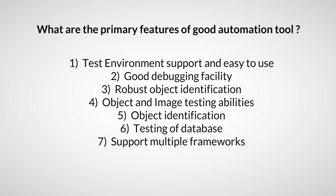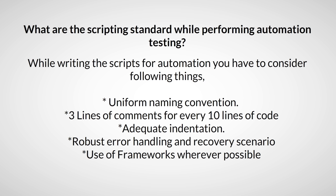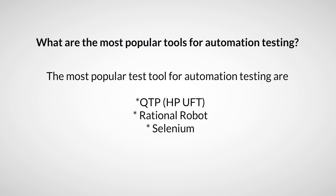What are the primary features of a good automation tool? The answers are: first, test environment support and easy to use; second, good debugging facility; third, robust object identification; fourth, object and image testing abilities; fifth, object identification; sixth, testing of database; and seventh, support for multiple frameworks.